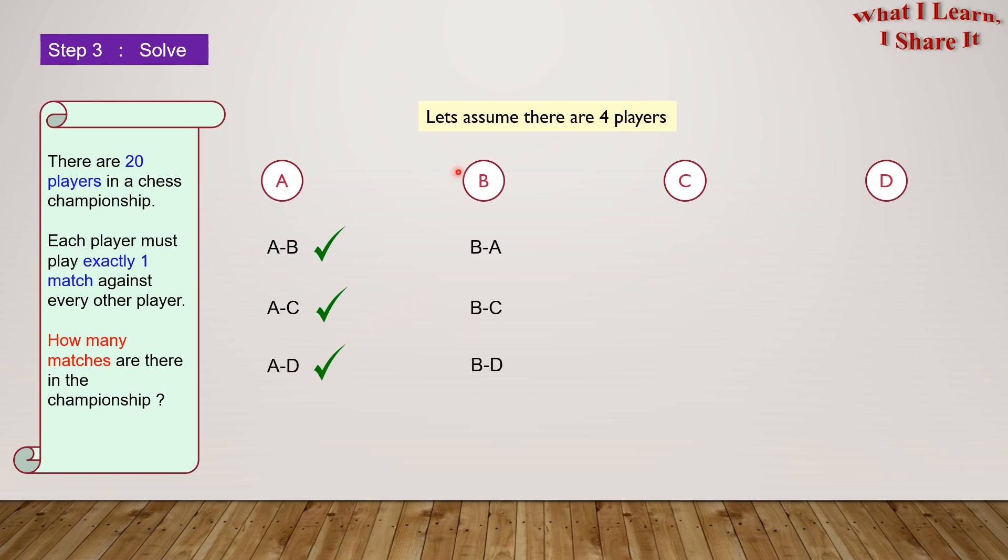So here are the possible combinations for player B: B-A, B-C, and B-D. Player B has already played with player A, so we won't consider this. But player B hasn't played with C or D, so we'll consider these two combinations.